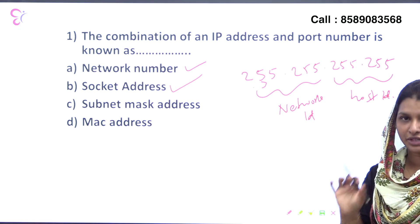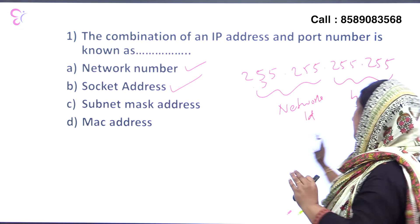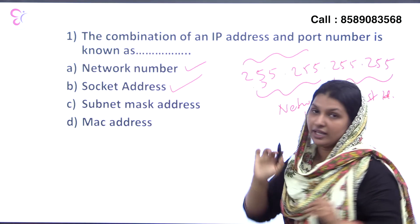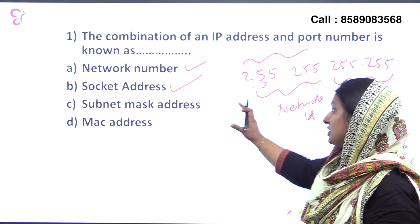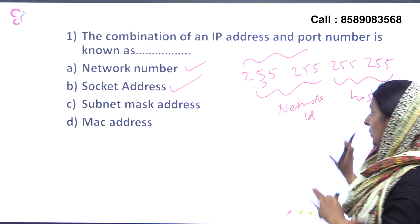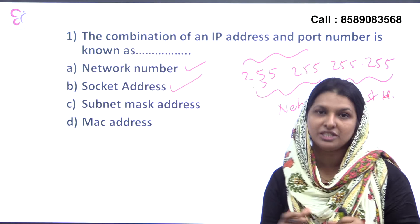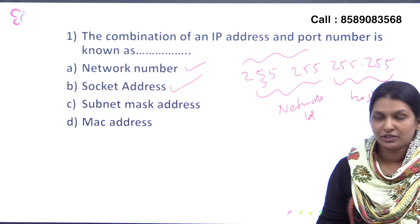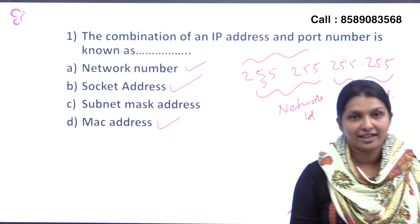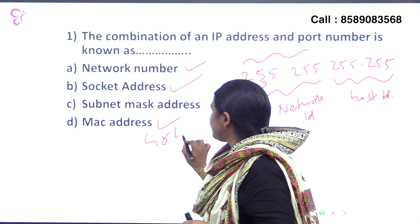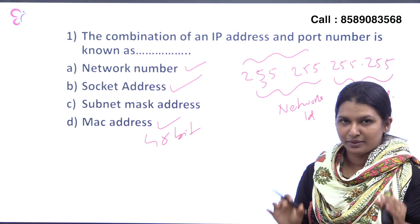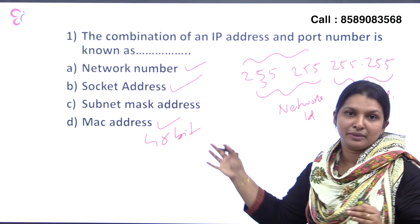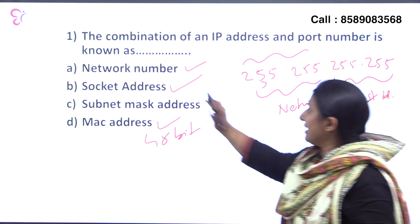The first part of the IP address is called the Network ID. The subnet mask separates the Network ID from the Host ID. The MAC Address, or Media Access Control Address, is a 48-bit physical address. So the answer to this question is Socket Address.